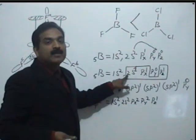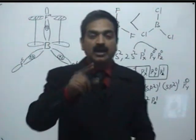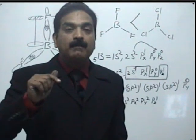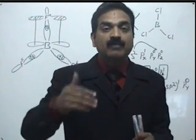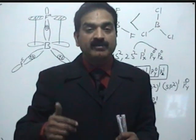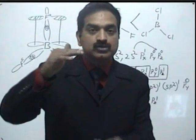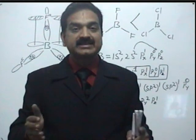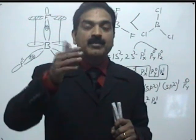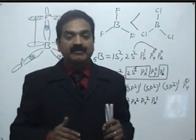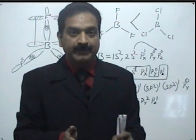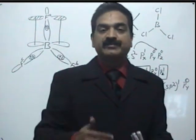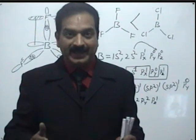Now the question arises: does back bonding not occur in BCl3? Back bonding is there in BCl3 also, but the extent is less. In BF3, both boron and fluorine involve their 2p orbitals in back bonding. In BCl3, chlorine's 3p orbital is involved while boron's 2p orbital is involved, creating a large energy gap between the orbitals. Due to this energy gap, the extent of back bonding in BCl3 is less. Therefore, BF3 is a weaker acid than BCl3.